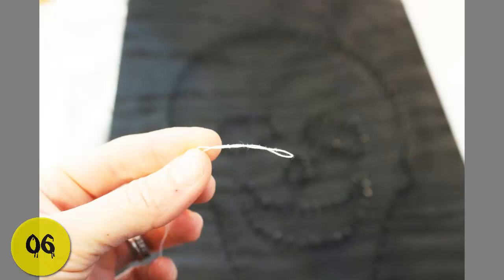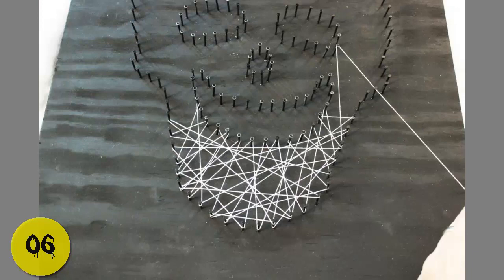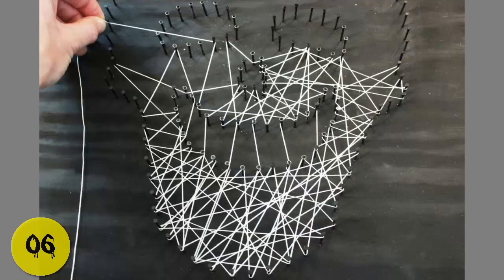Step 6: Grab your roll of white cotton string. Tie a knot on the end of your string, hook it onto a nail, and begin stringing. You can cut the string end if you want. To be honest, I meant to but completely forgot, and then I couldn't find the end later on. That's a good sign, I guess.